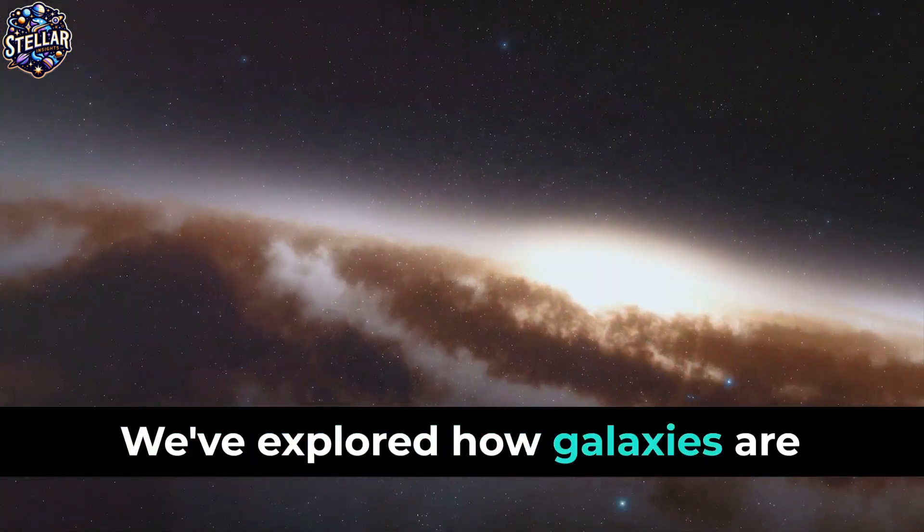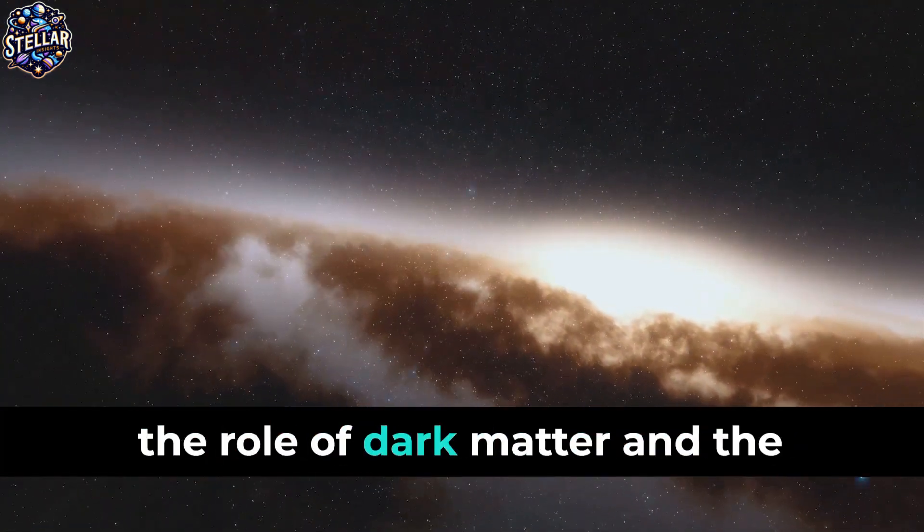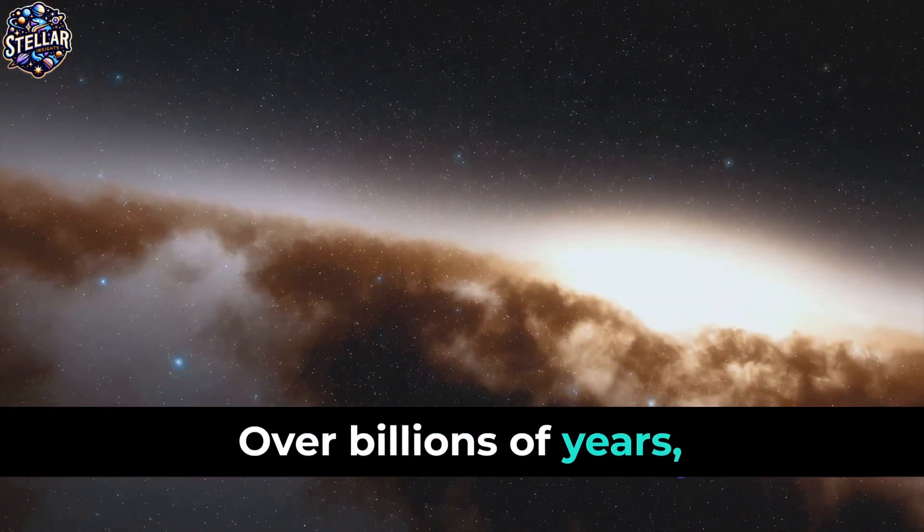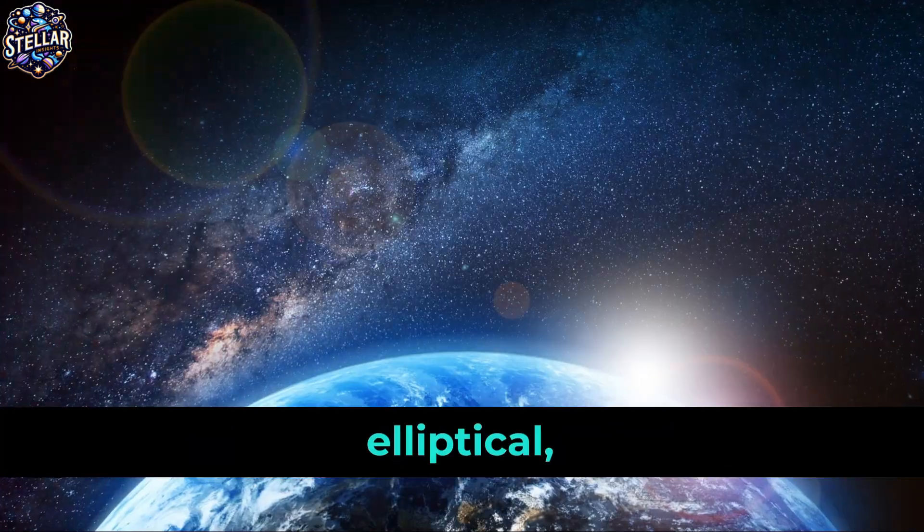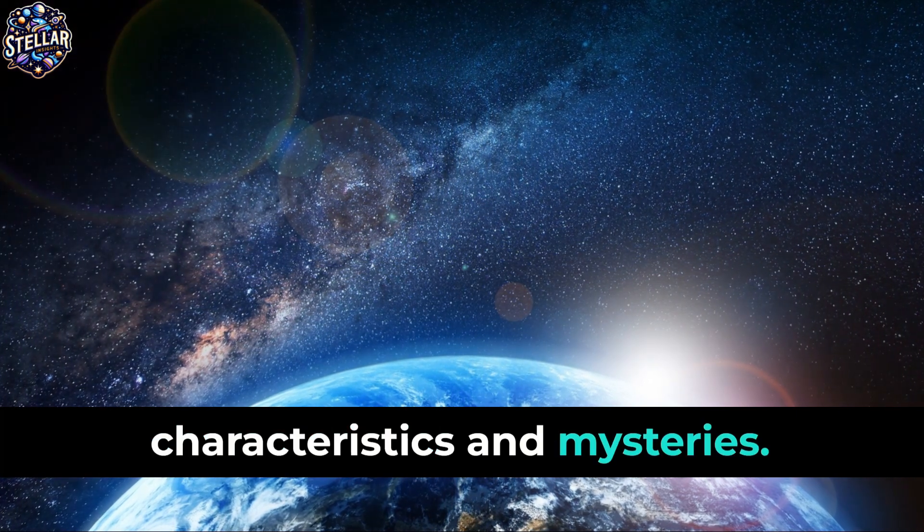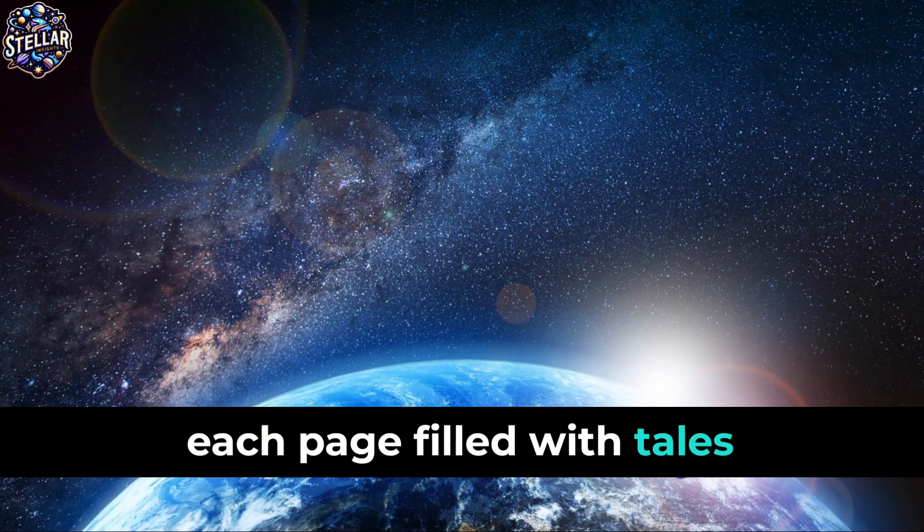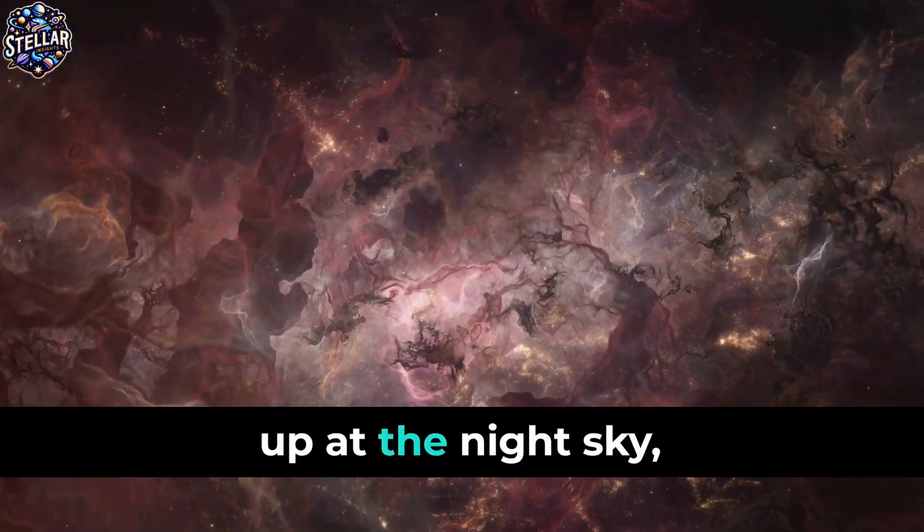We've explored how galaxies are formed from their earliest beginnings in the cosmic web, the role of dark matter, and the processes that influence their growth and transformation over billions of years. We've also delved into the different types of galaxies—elliptical, spiral and irregular—each with its unique characteristics and mysteries. Remember, every galaxy is a cosmic storybook, each page filled with tales of stellar birth, death and transformation. So next time you gaze up at the night sky, remember, every point of light is a galaxy with its unique story to tell.